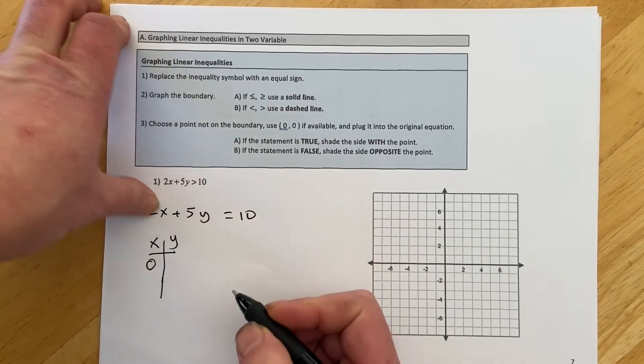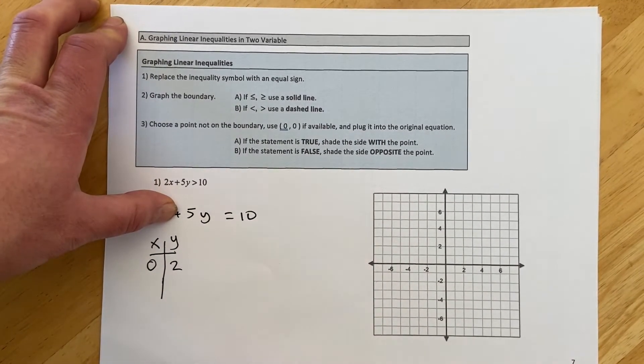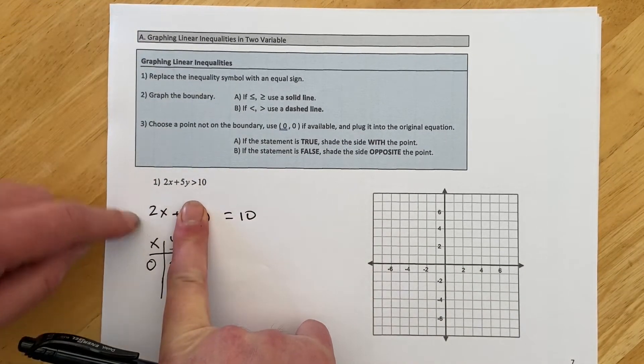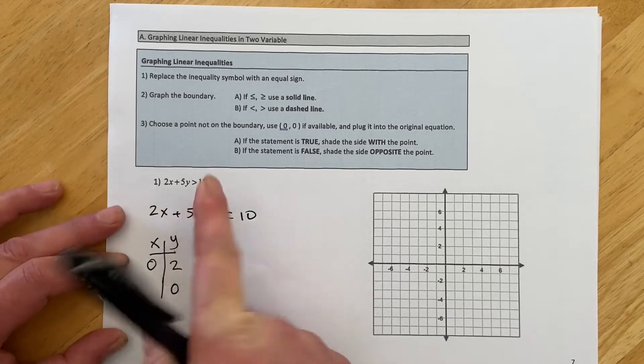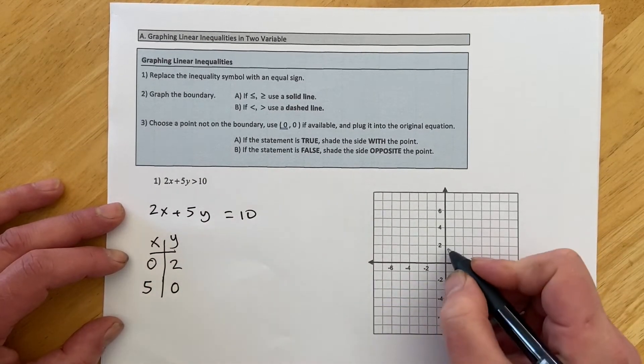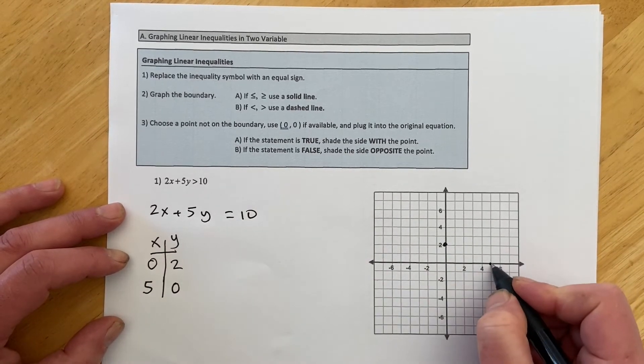So if x is 0, that drops that piece out, and I have 5y equals 10, so then the y would be 2. If y is 0, that piece will drop out, and I have 2x equals 10, so x would have to be 5. That gets me my two points. When x is 0, y is 2, and when x is 5, y is 0.